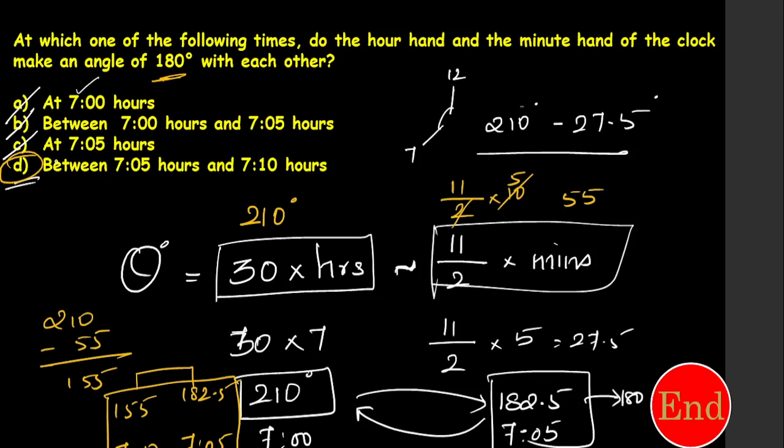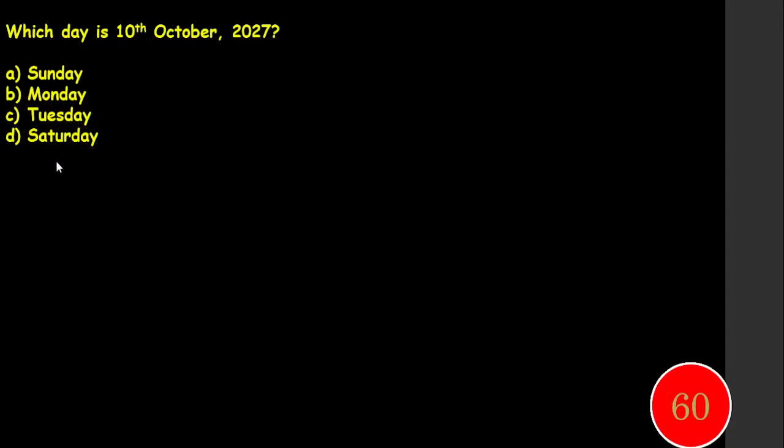So the formula is: angle theta equals 30 times the hour difference, minus 11 by 2 times minutes. Now try the next question.